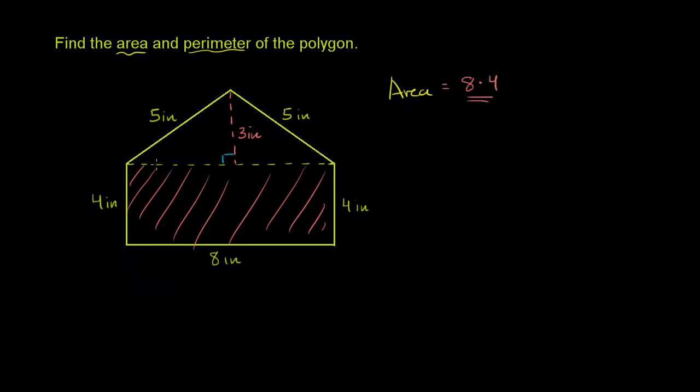And then we have this triangular part up here. So we have this area up here. And for a triangle, the area is base times height times 1 half. And that actually makes a lot of sense, because if you just multiplied base times height, you would get this entire area. You would get the area of that entire rectangle. And you see that the triangle is exactly half of it.